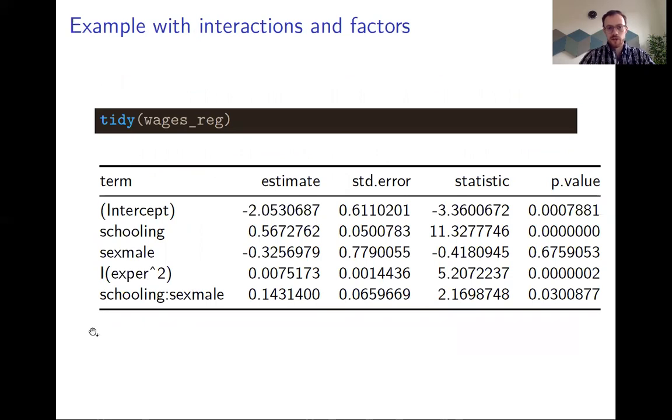Again, we just display all of this using the tidy function. This regression explains the wage depending on schooling, sex, experience squared, and then interaction of schooling and the gender of the observation.